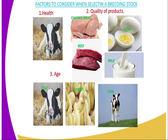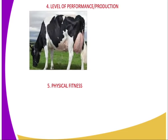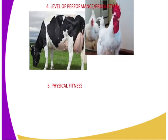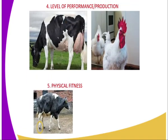The fourth factor is level of performance, which refers to the level of production. Animals selected should have a high level of production so that they can transfer those genes to the offspring.